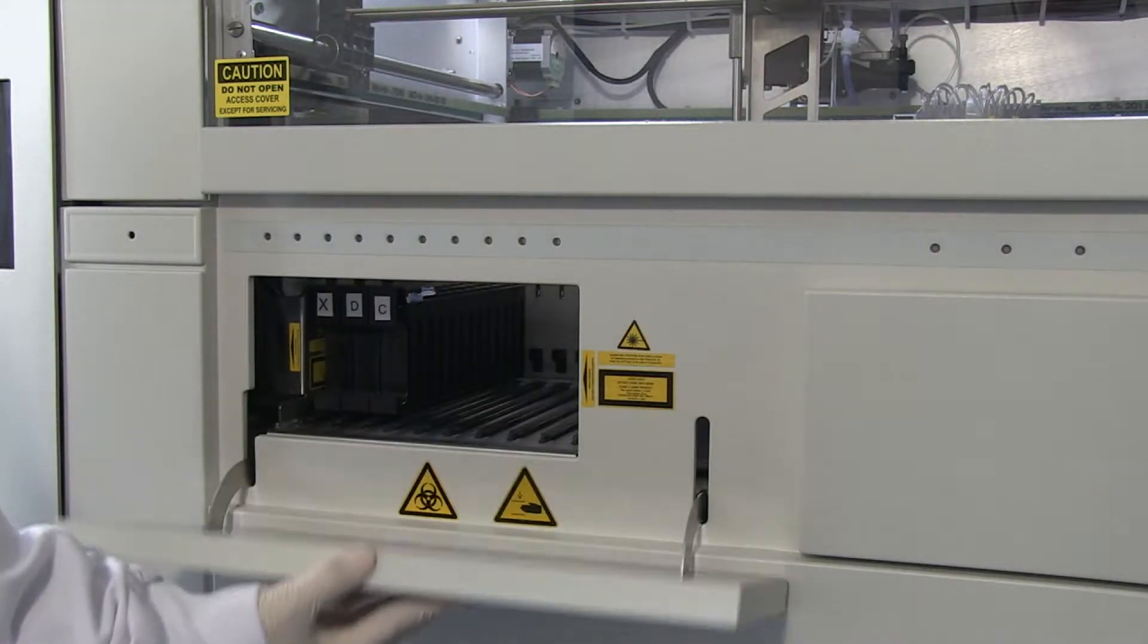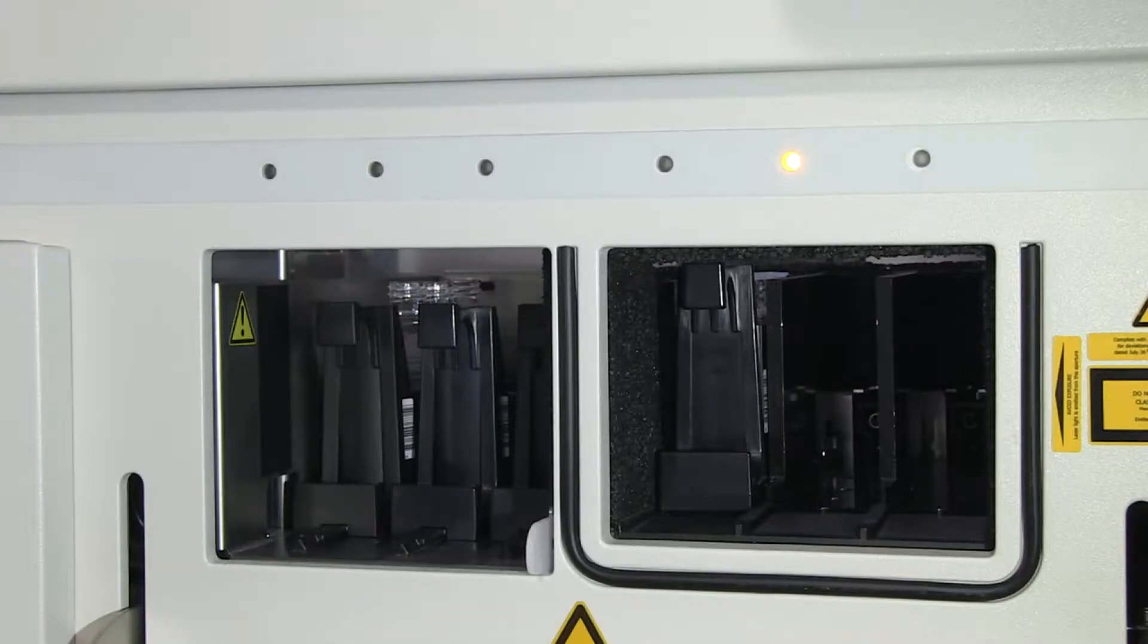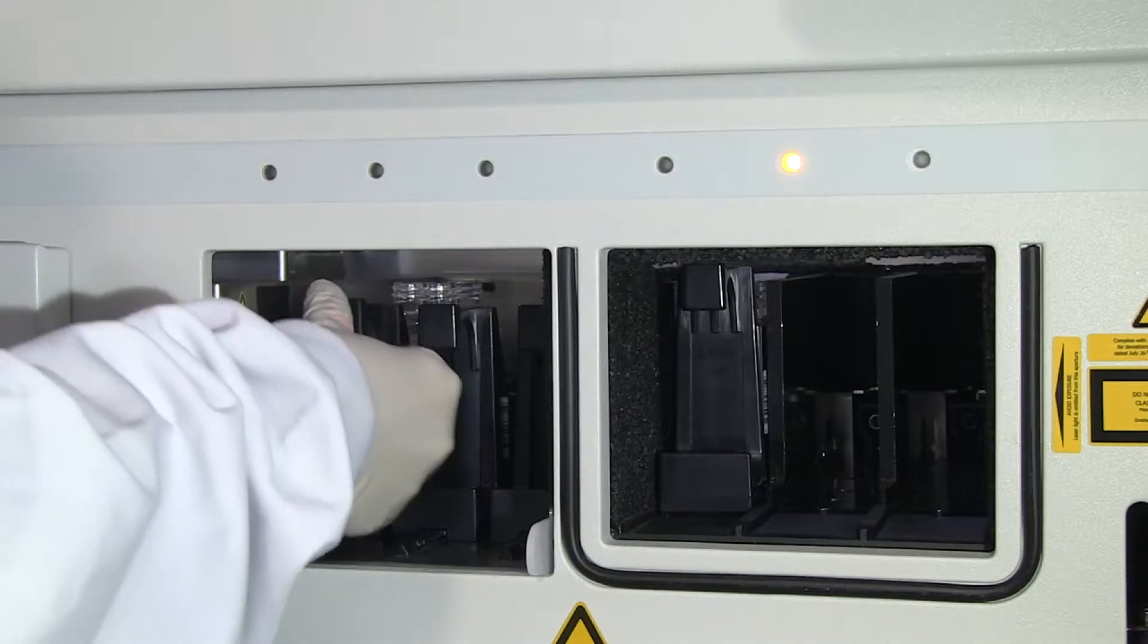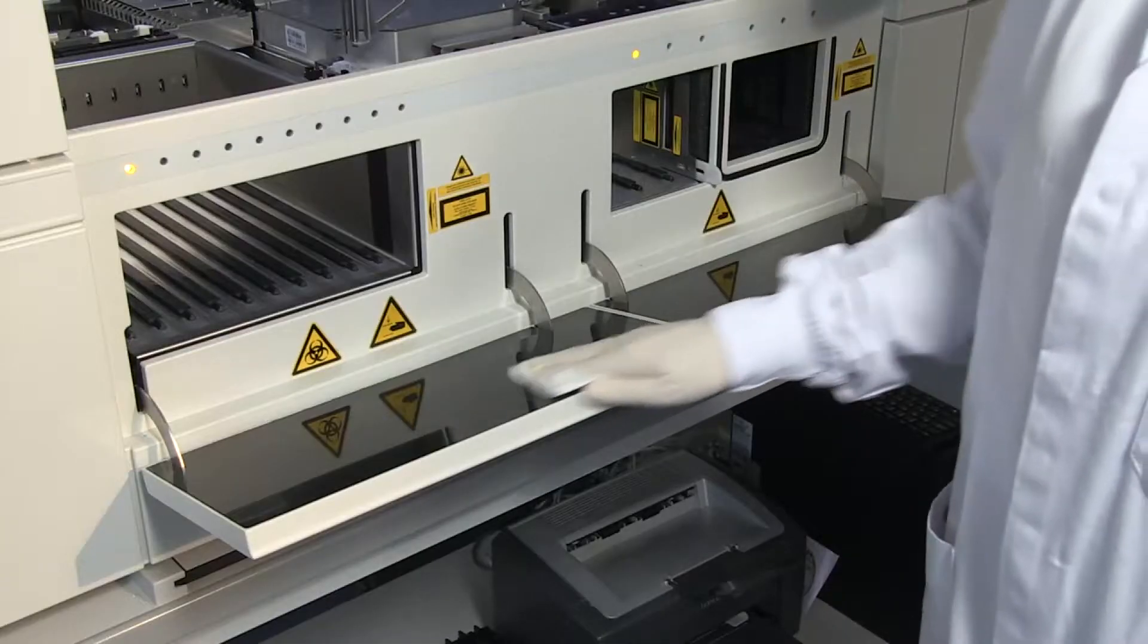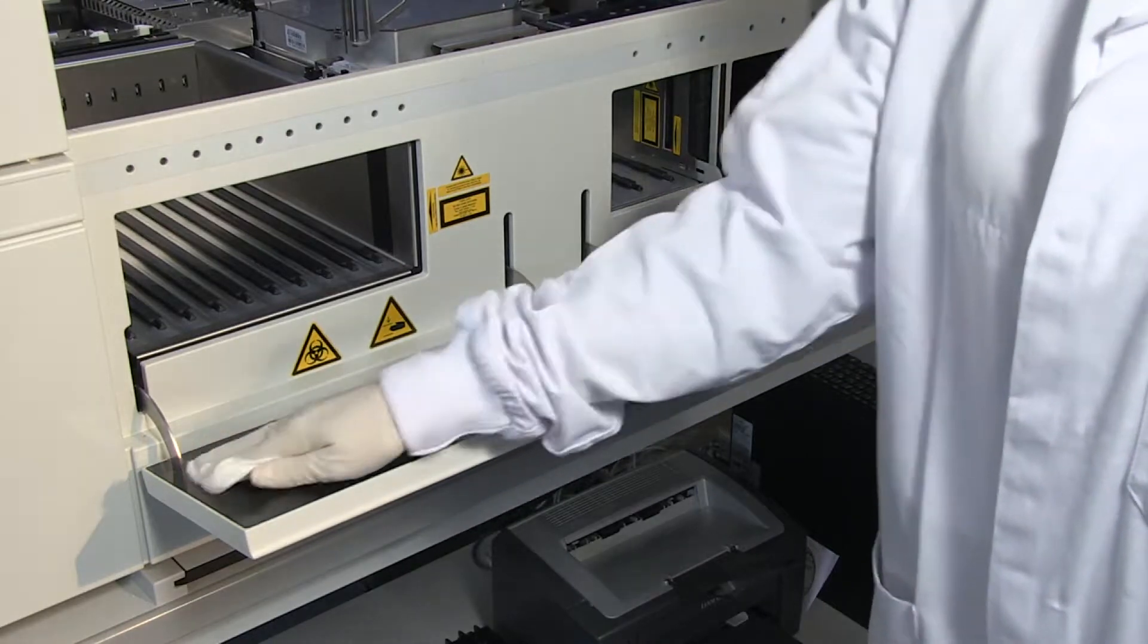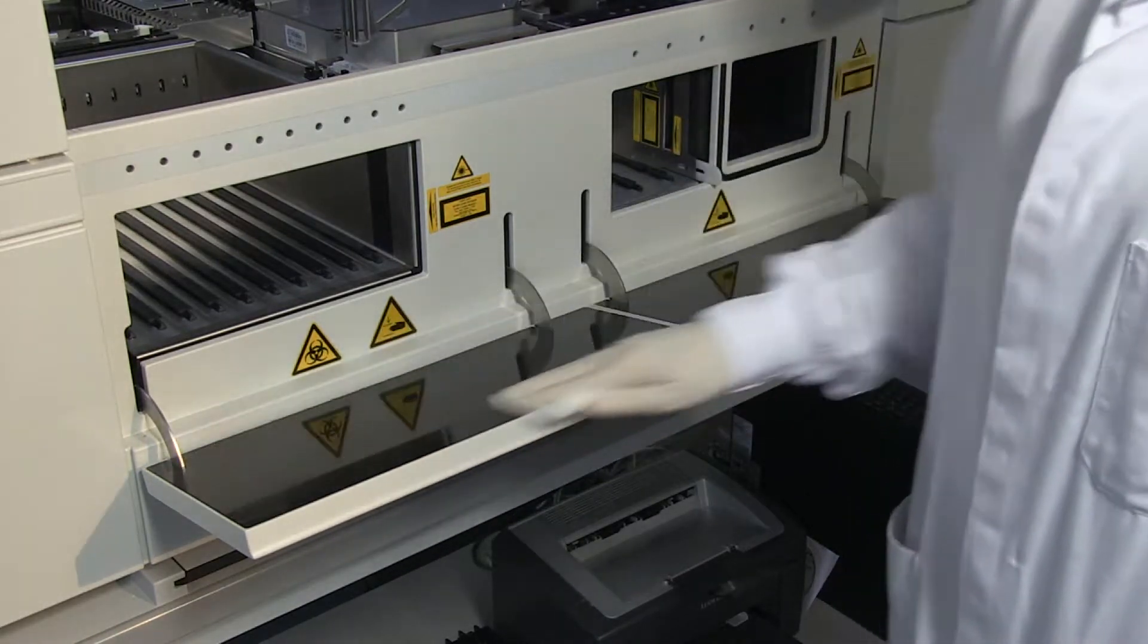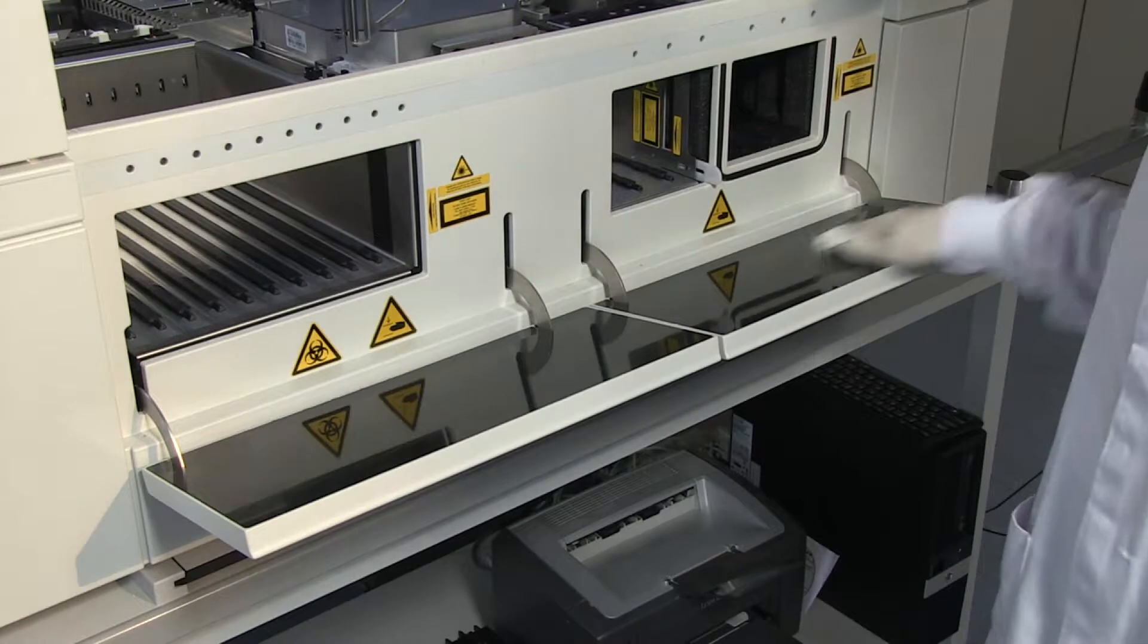Open the sample bay door and the reagent bay door. Remove all sample racks and reagent racks. Clean up any splatters and spills on the sample bay door and on the reagent bay door by wiping with water or water-based detergent.